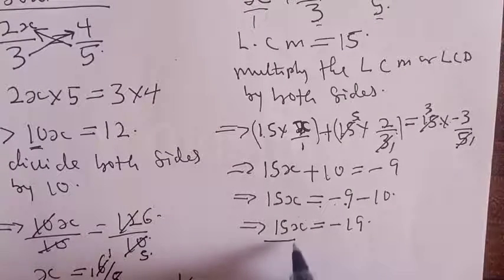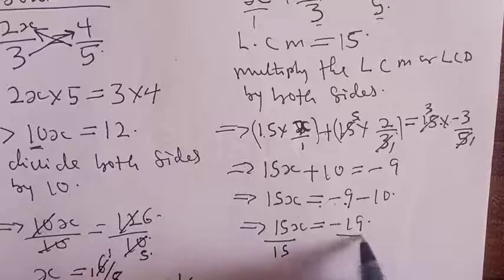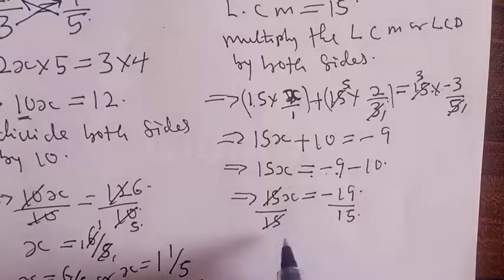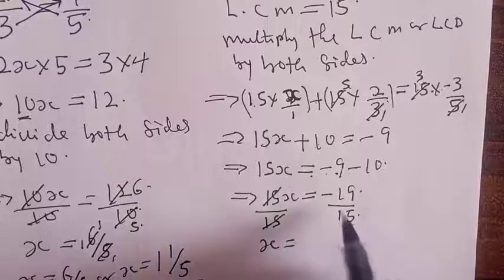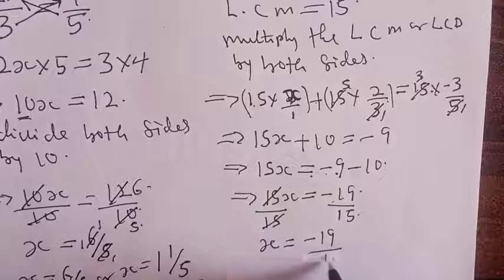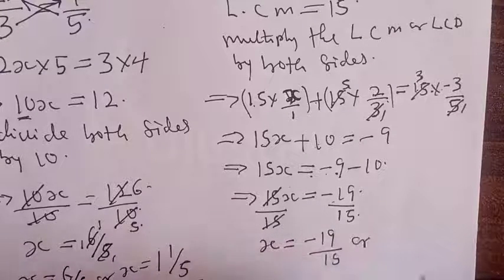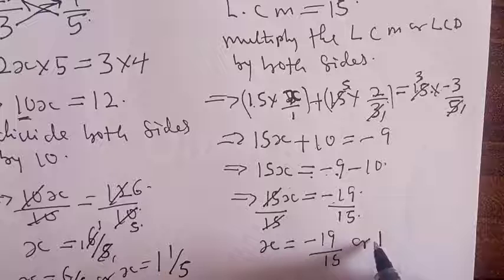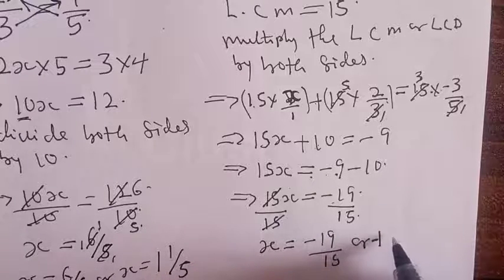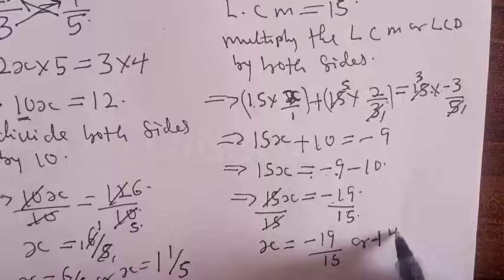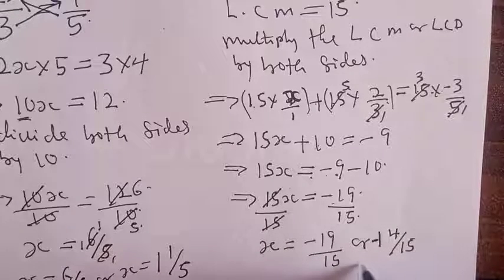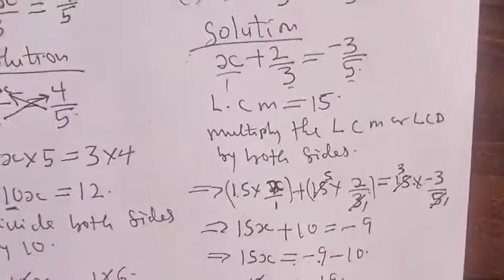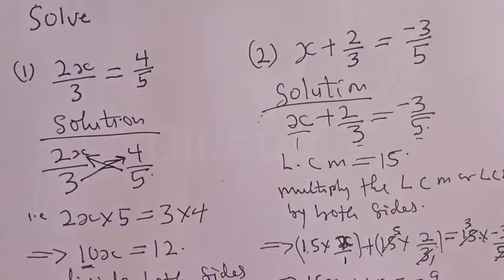Therefore we divide both sides by 15. 15 over 15 cancels, and we are left with x equal to minus 19 over 15. As a mixed number, 15 goes into 19 once with remainder 4, so x equals minus 1 and 4 over 15. The answer is x equals minus 19 over 15. I believe the questions are very simple and easy to solve.